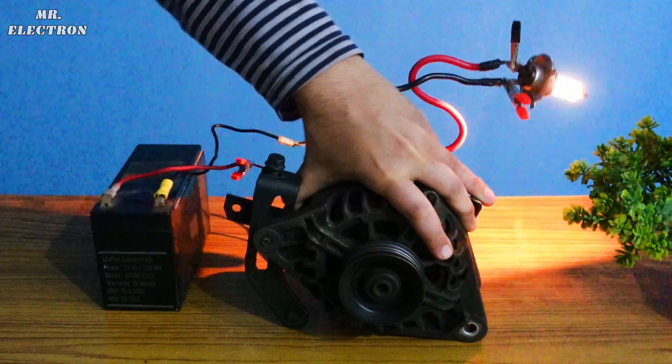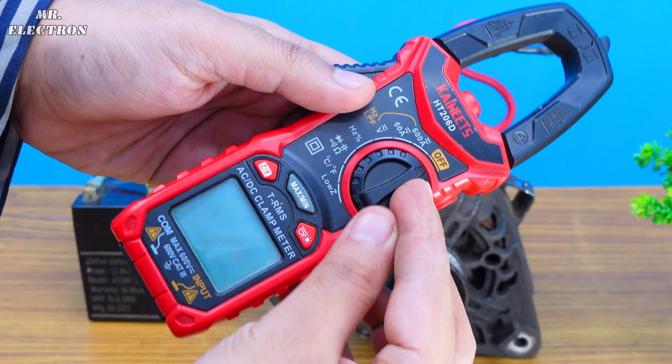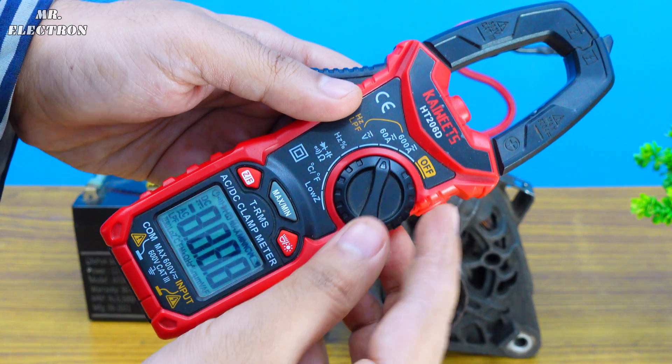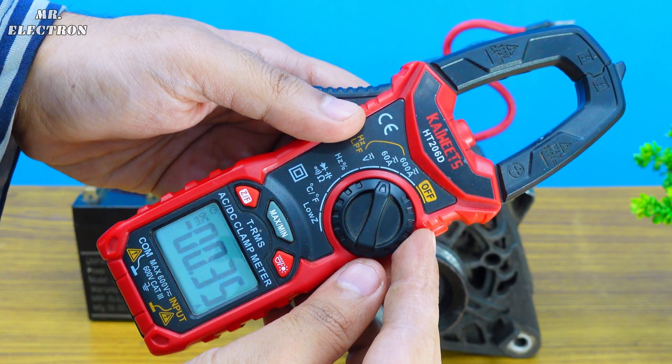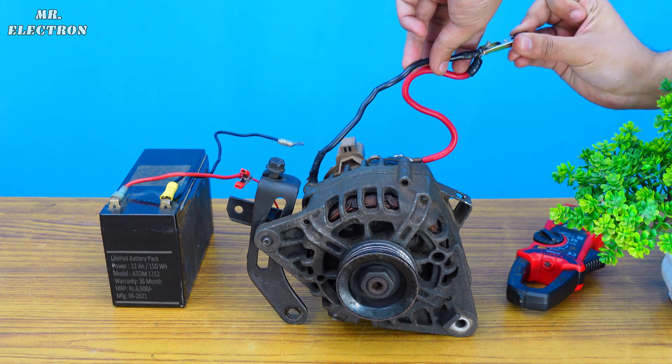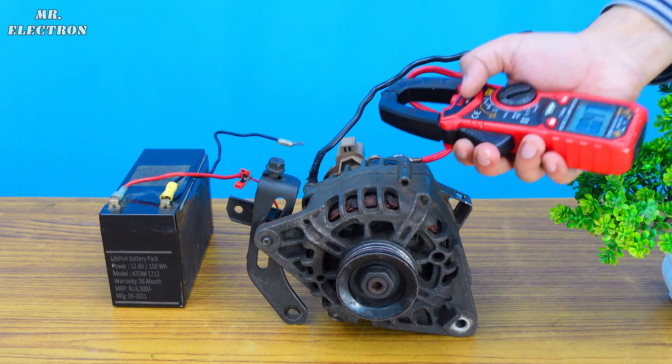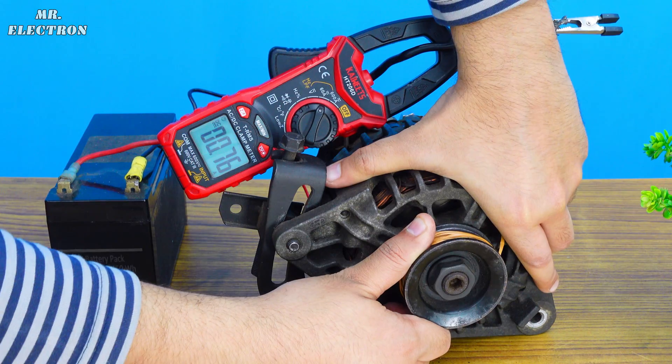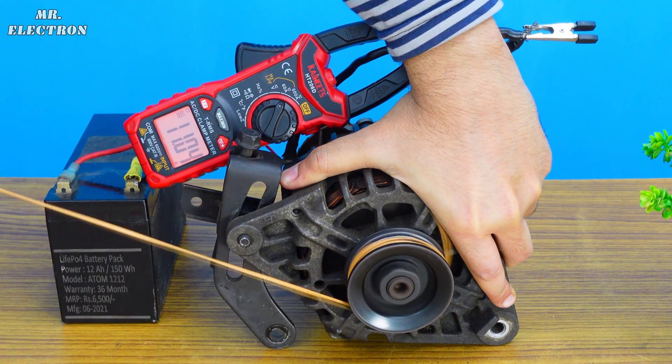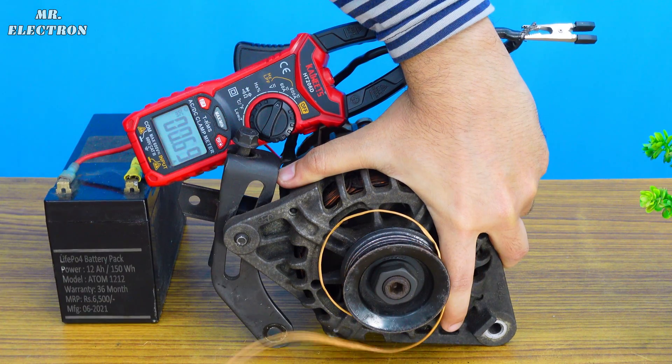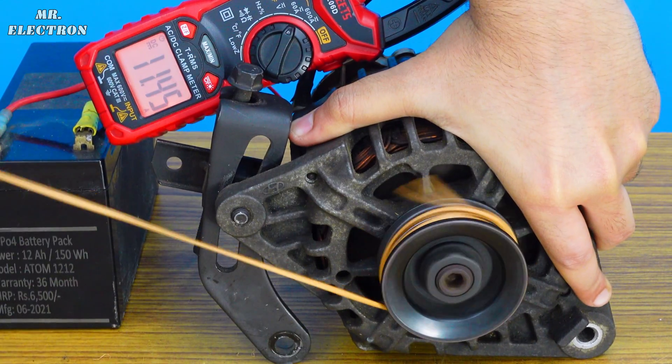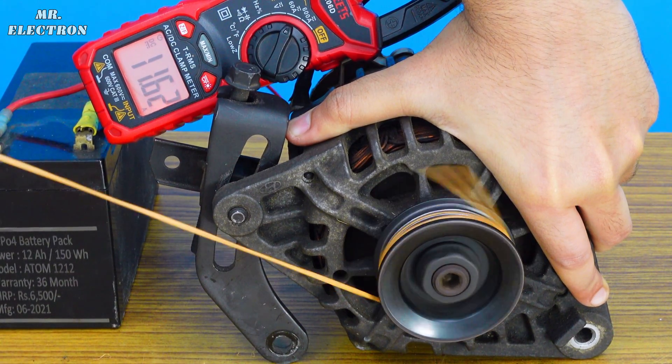Now let's use this bulb as load for the alternator. It's a car headlamp incandescent bulb, 12 volts. Okay, go. Working great as expected. Now let's use this clamp meter to measure the short circuit current through rope rotation testing. Okay, go. It gets really tight to rotate under short circuit conditions, so a befitting example for the free energy content creators and believers.